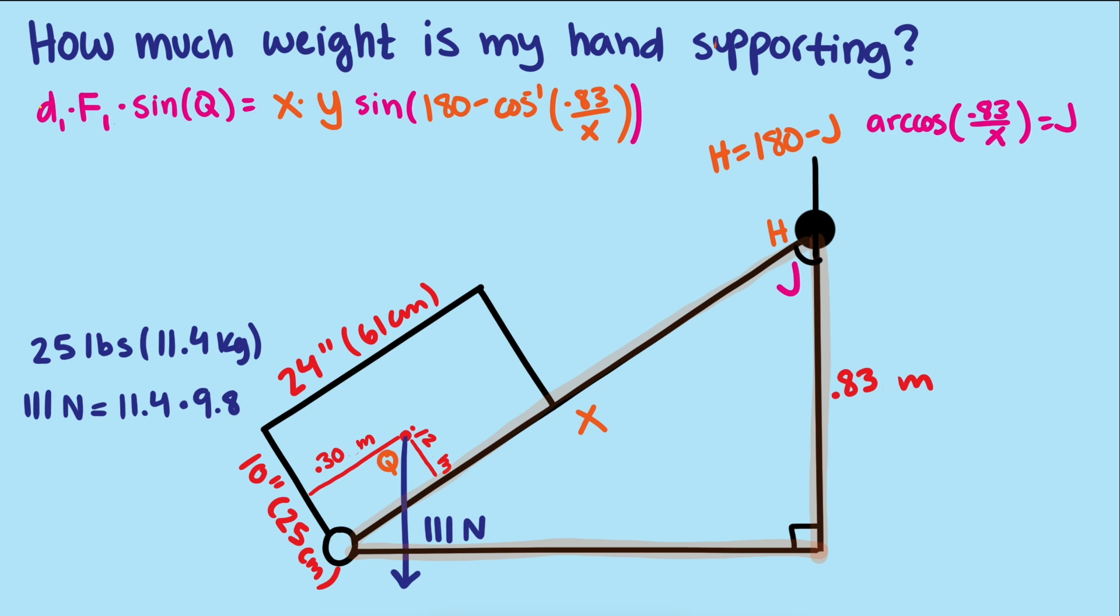Next we need the torque of the suitcase. Remember the formula for the torque is the force times the distance times the sine of the angle. We already know that the force going down is 111 newtons. The distance from the wheel to the center of gravity will just take some simple trig to find. We assume the location of the center of gravity is 0.3 meters up from the base and 0.12 in from the handle side. So the distance from the wheel to the center of gravity is found by the Pythagorean theorem.